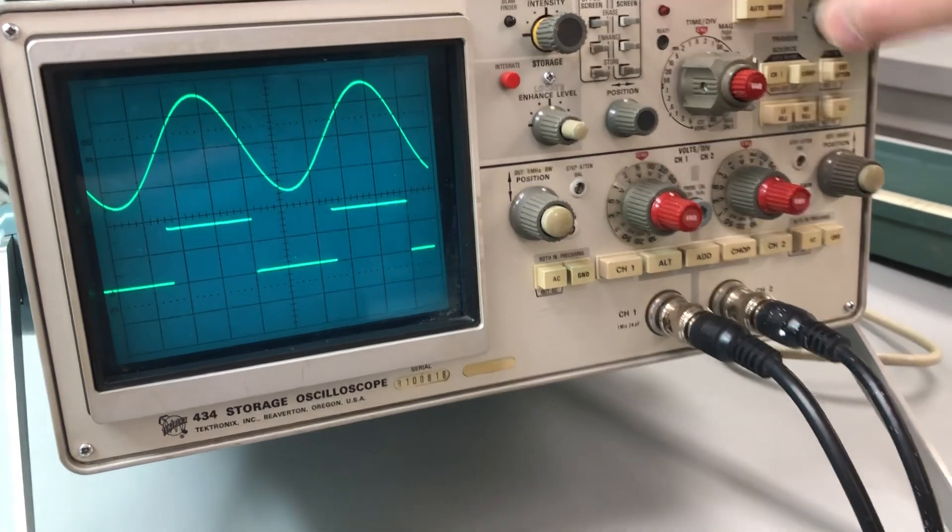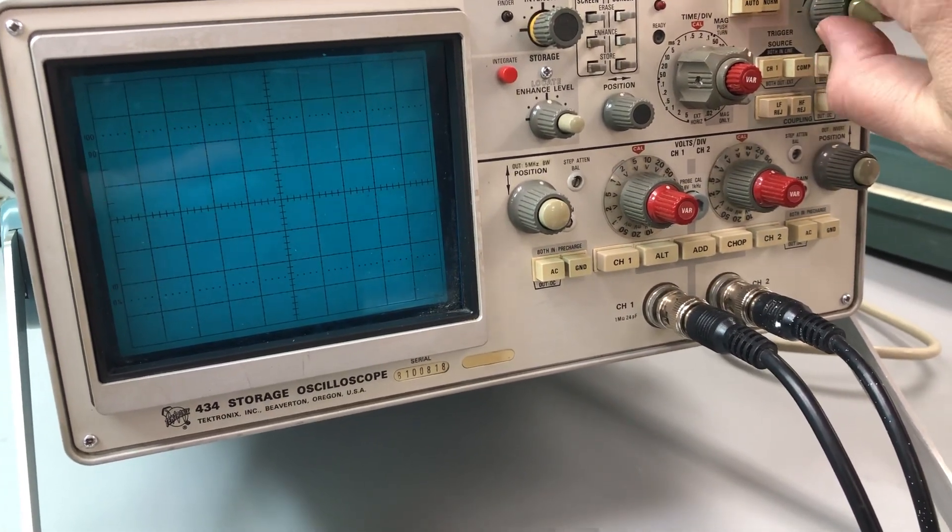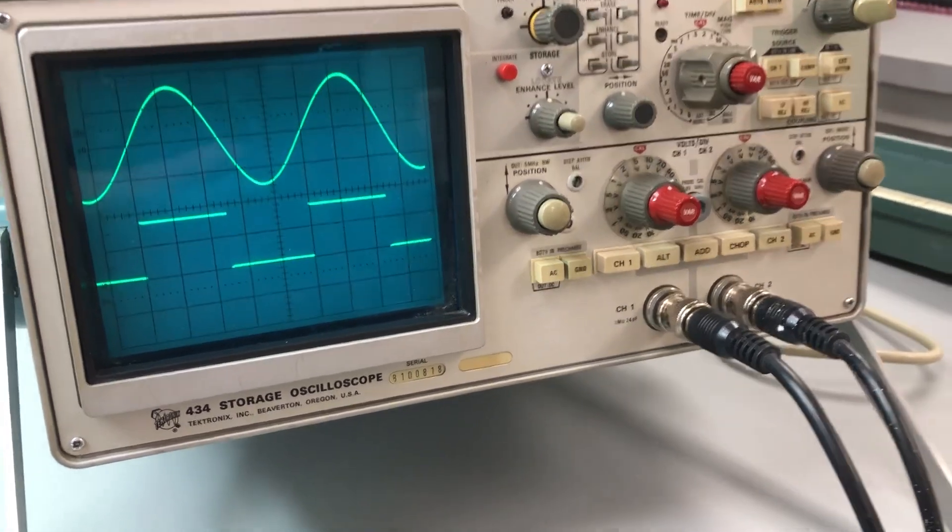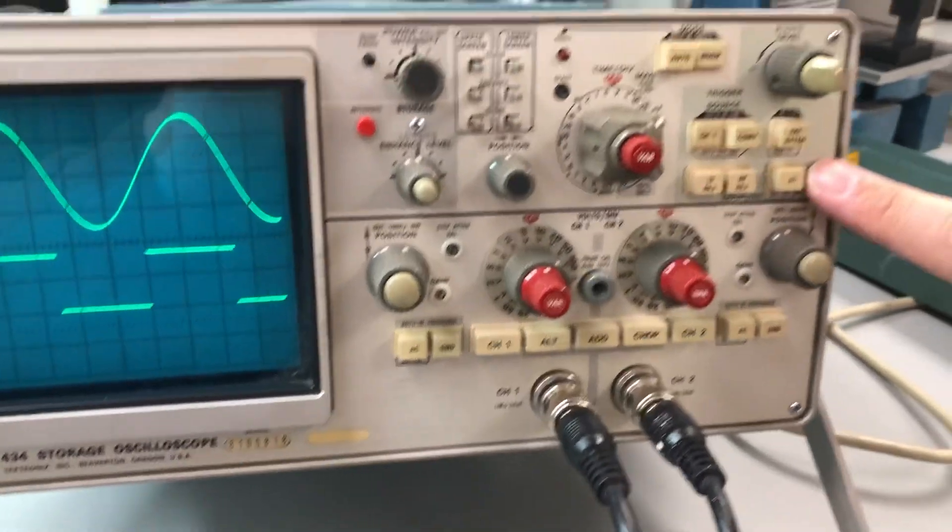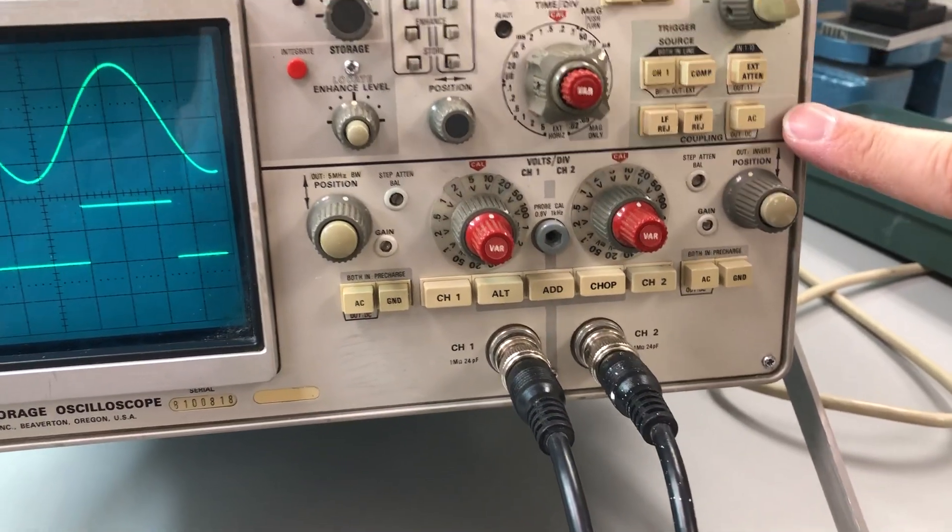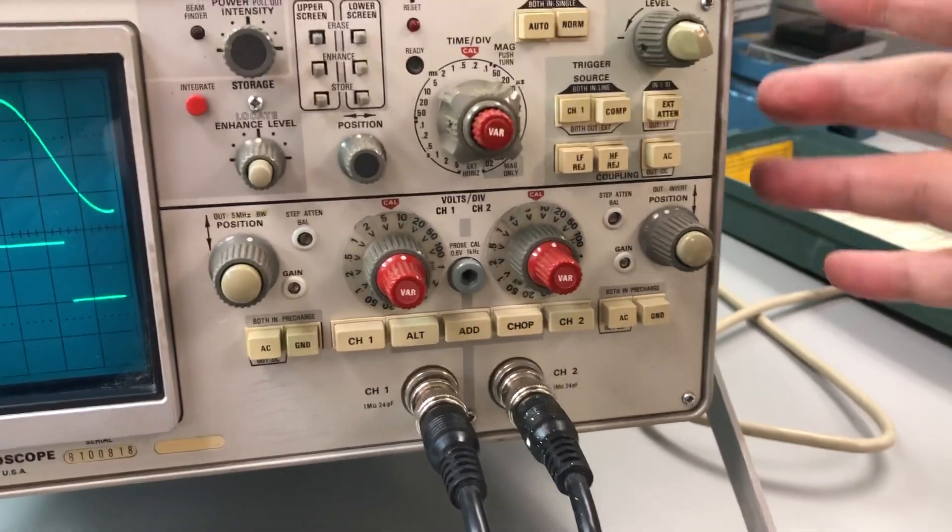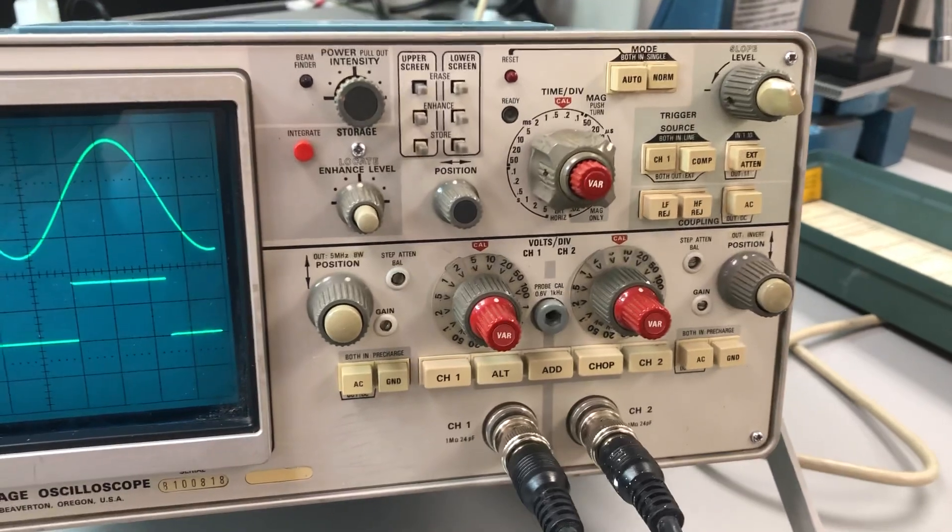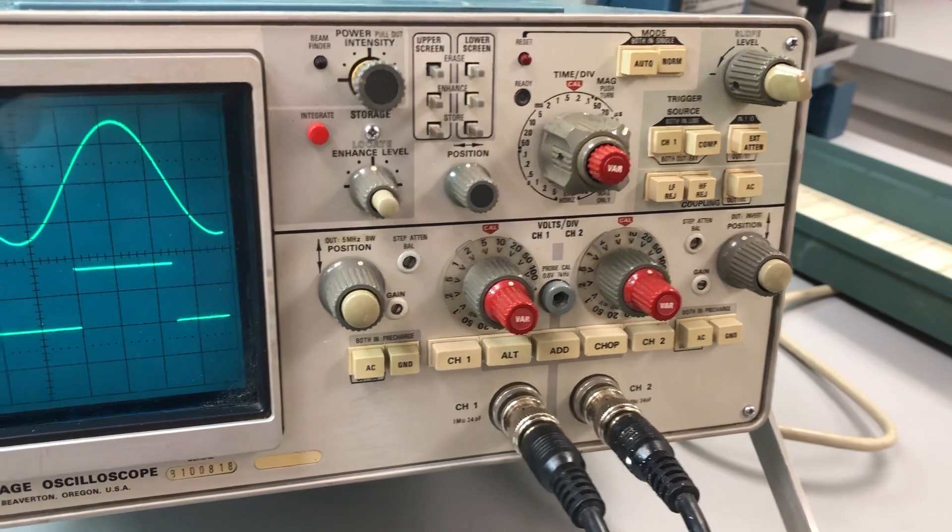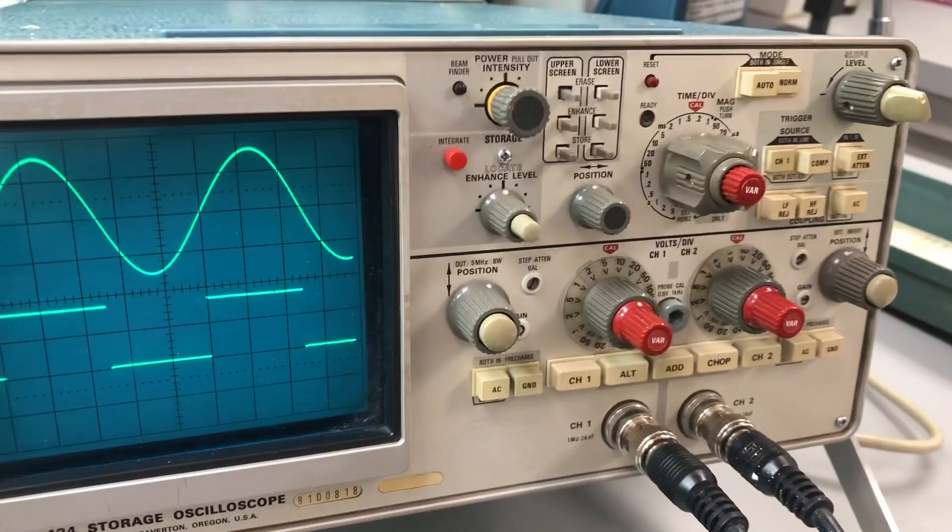Play with the trigger here. So I can change the slope of the trigger and the trigger level. Trigger on channel one, by the way. I'm not sure how to get it to trigger on channel two or if it's even possible. It doesn't seem like it's possible looking at the controls, but maybe there's a way. I don't have the manual for this.